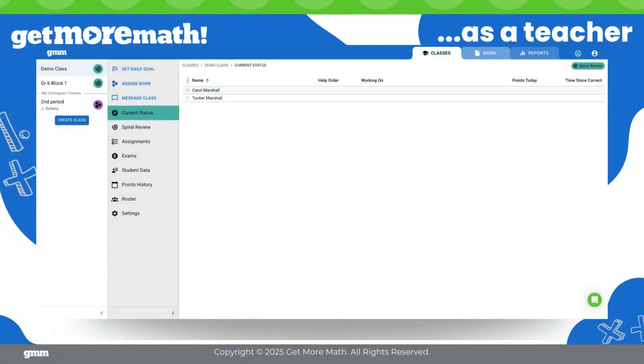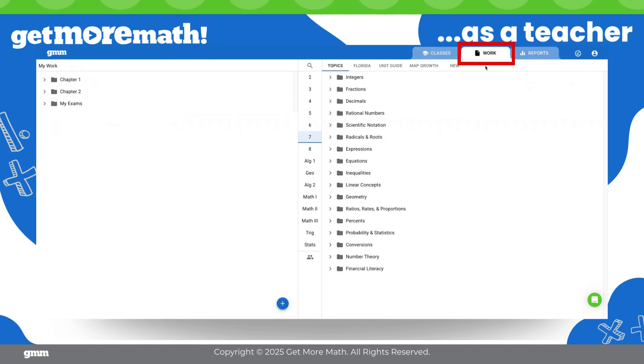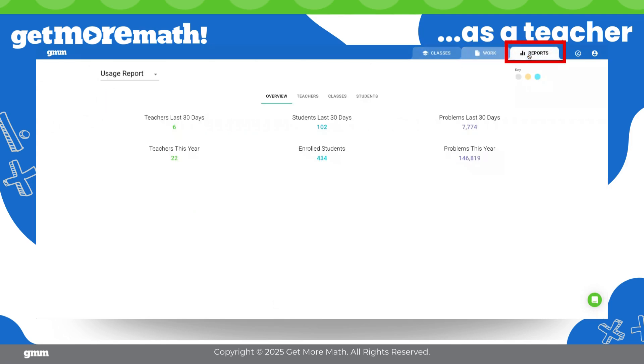Inside the Teacher app, we have three tabs across the top. The first tab is where we create our classes and manage the various reports associated to each class. The Work tab is where we can build assignments and exams. The Reports tab is for our administrative users to view usage data at the district, school, class, teacher, or student level. But for now, let's focus on the Work tab.